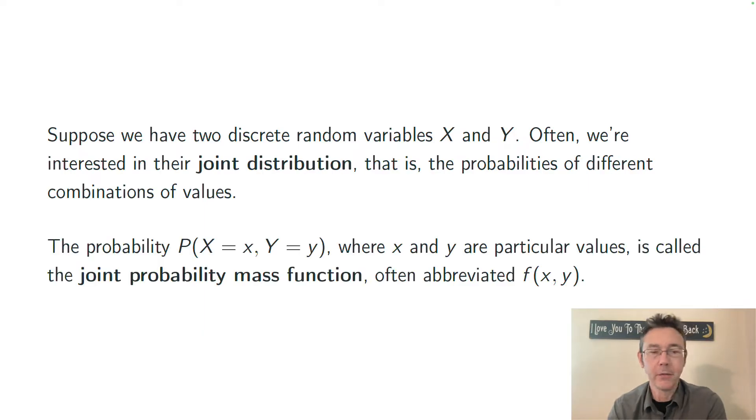A bit more specifically, we want to know the probability that the first random variable is equal to some value, call it little x, and the second random variable is equal to some other value, call it little y. This is called the joint probability mass function, and it's typically abbreviated little f of (x, y). So here we're in a situation where we're talking about a function of two variables.